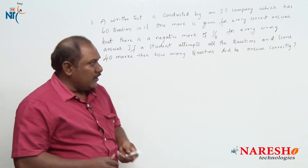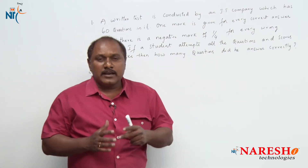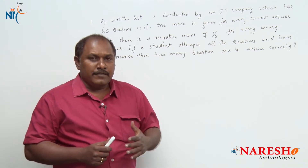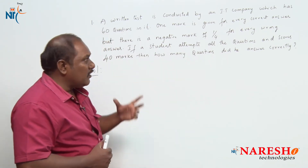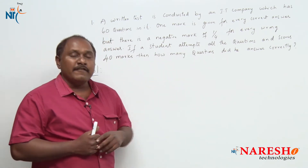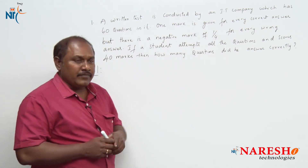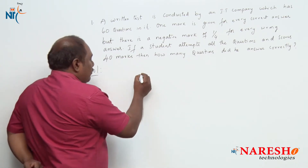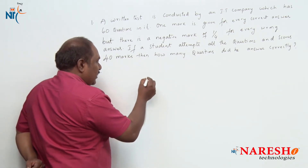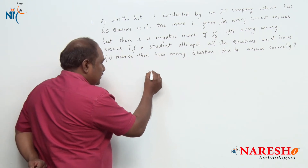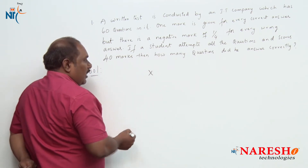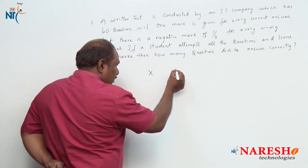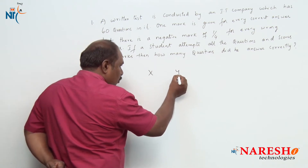This particular question can be answered in two ways. First, we can answer this question by using variables. Let us suppose the number of questions he answered correctly is x, and the number of questions he answered wrongly is y.